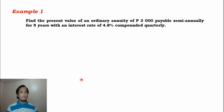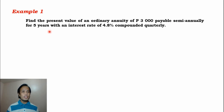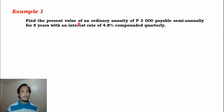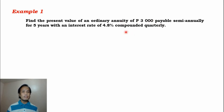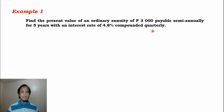Let's proceed to example number one. We are told to find the present value of an ordinary annuity of 3,000 pesos payable semi-annually for five years with an interest rate of 4.8% compounded quarterly. Analyzing the problem: the payment interval is semi-annual, meaning twice a year every six months. The compounding period is quarterly, meaning every three months — so the payment interval is different from the compounding period.